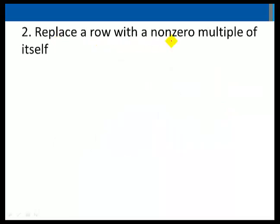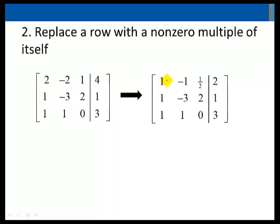I can also replace a row with a non-zero multiple of itself. So let's replace row 1 with 1 half times row 1 and the new row 1 is now 1, negative 1, 1 half, 2.